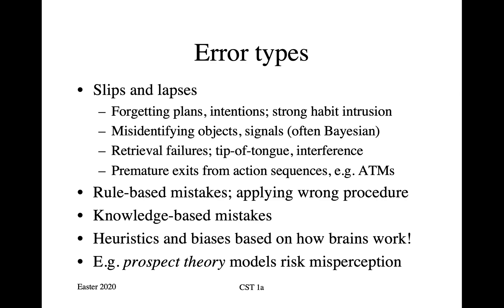It's not enough to know just the error rates — you also have to think about the error types. I mentioned slips and lapses. One type is forgetting plans and intentions, where habit intrusion is something to watch out for. For example, when I leave the computer lab I usually turn left onto the Mattingly Road and then onto the M11 to go home. But about once a week I go to see the kids, and I'm supposed to head toward Cambourne. It can happen that I find myself going down the M11 because that's just what I usually do.